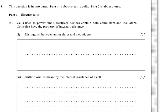So this question is about cells and, more importantly, internal resistance. Cells are used to power small electrical devices and contain conductors and insulators. Define a conductor and an insulator.